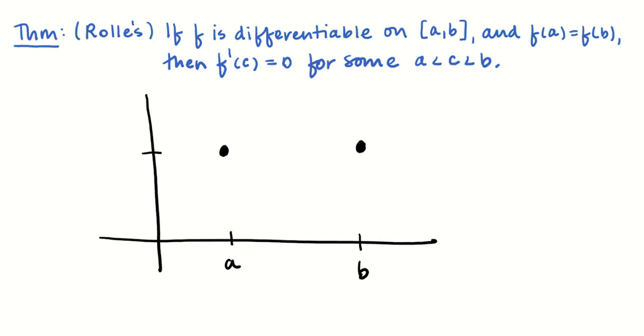Now, it definitely could be the case that f prime of c is equal to 0 everywhere if the function was just constant. But the idea is that if it's not constant, and say it goes down, then it's going to have to go back up.